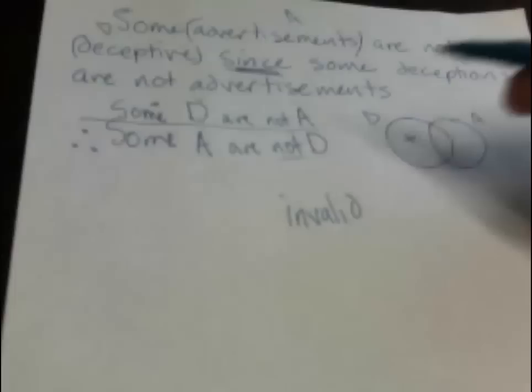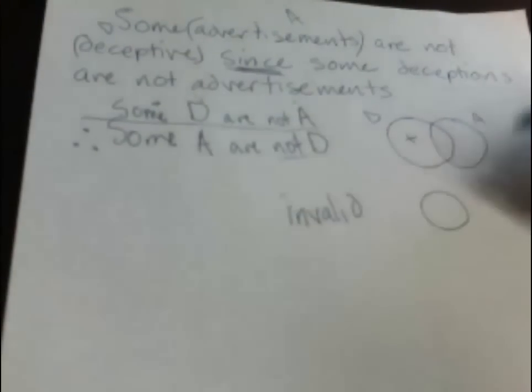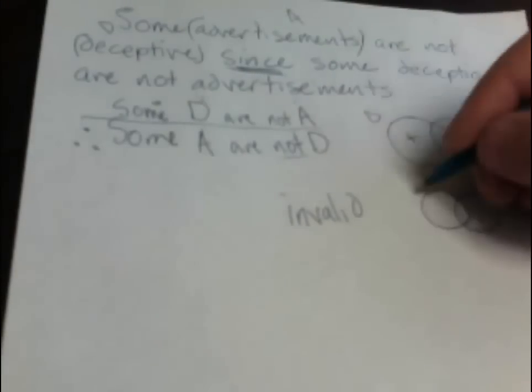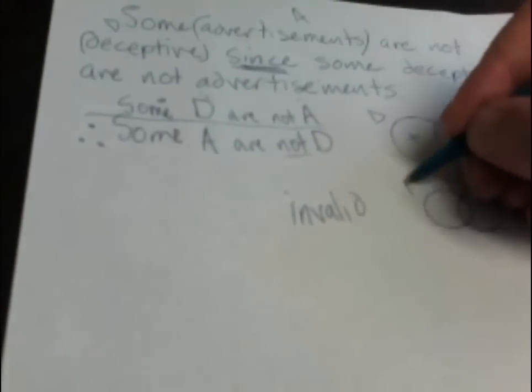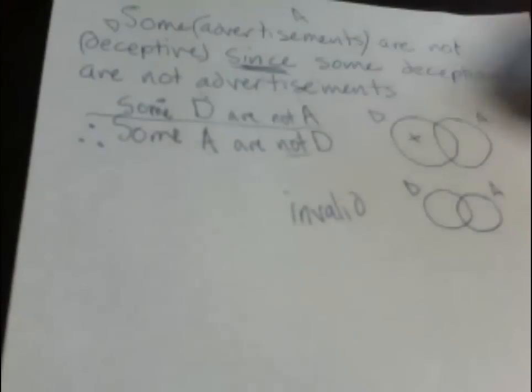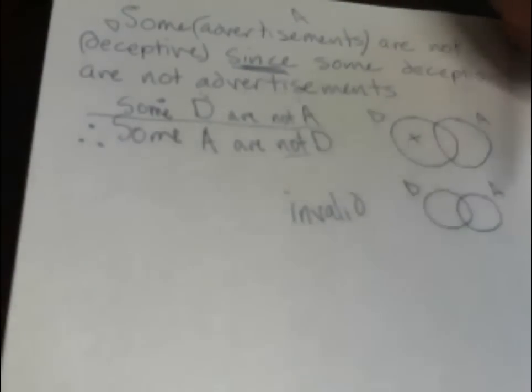It doesn't hurt to draw a separate conclusion diagram if you need to. Here's what the conclusion would look like if we were going to put it on the diagram. We want the order of the circles to match, so we'd write D as our left circle, A as our right circle, if we're representing the conclusion.